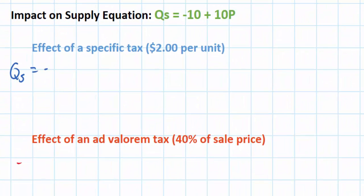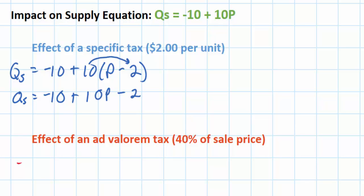We can do Qs equals negative 10 plus 10 times price minus the $2 tax. Because the tax has to be paid by the sellers of the good to the government, therefore whatever price consumers pay, producers are going to keep $2 less. Let's simplify this equation. Qs equals negative 10 plus 10 times P minus 10 times 2 which is 20. I can now simplify this again and I've got my new supply equation of negative 30 plus 10P.